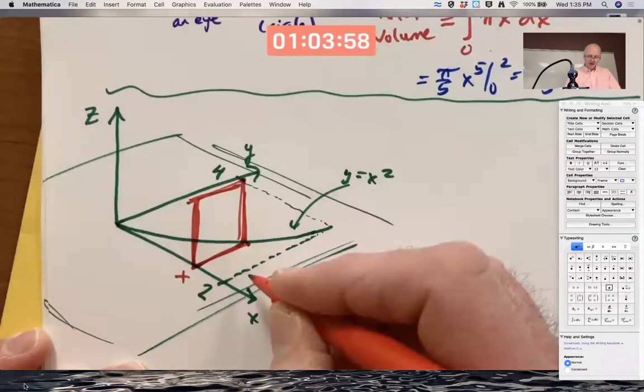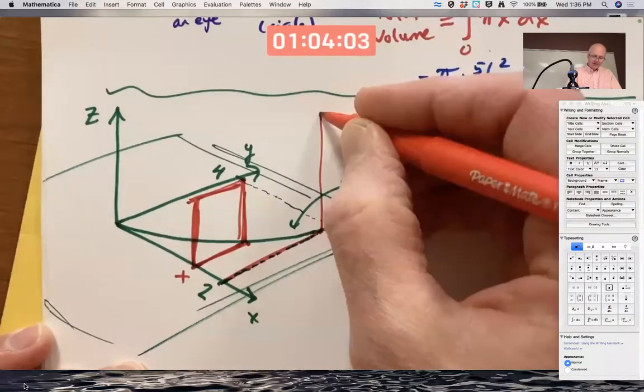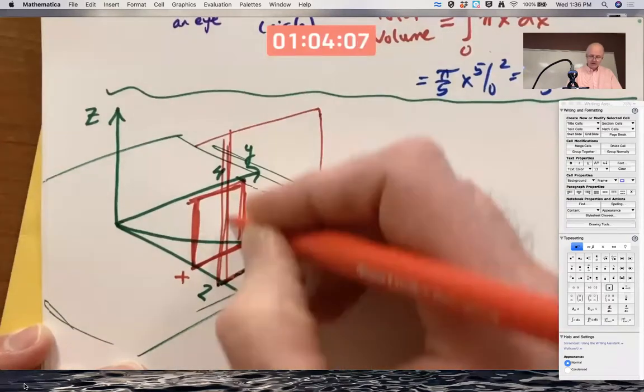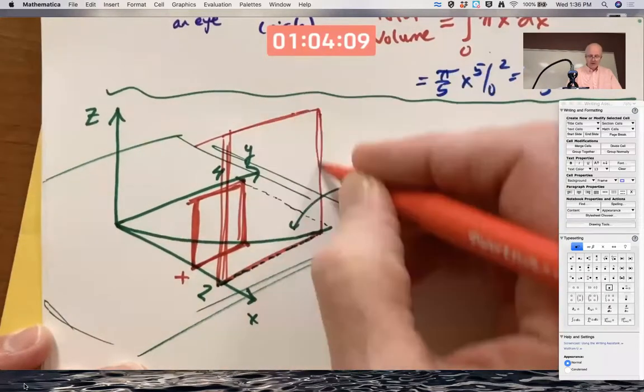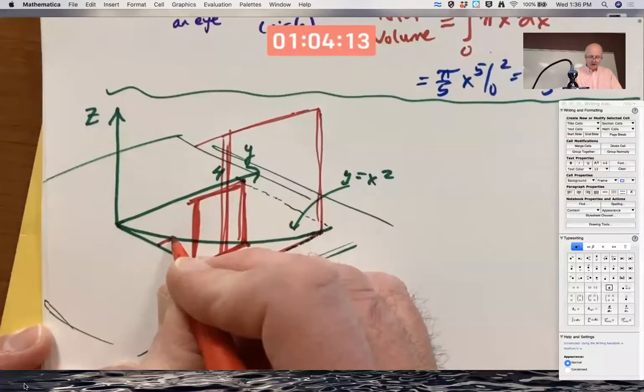If I draw one over here, when X is 2, it's going to be a pretty big square. I need to draw my vertical lines first. If I draw one over here, it's going to be a pretty small square.